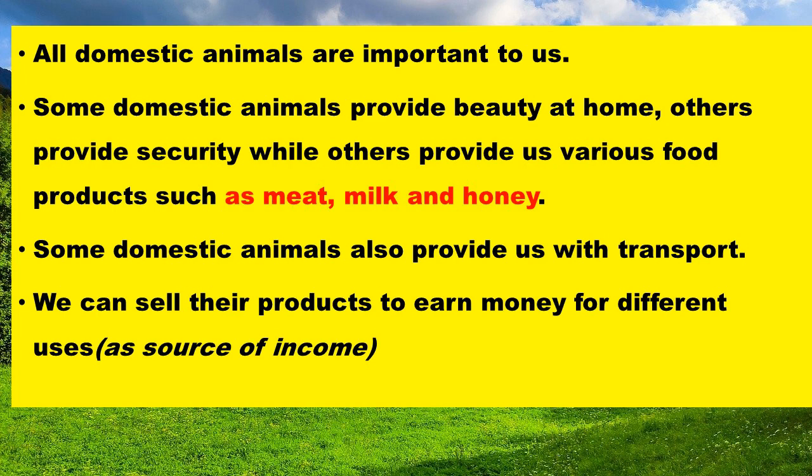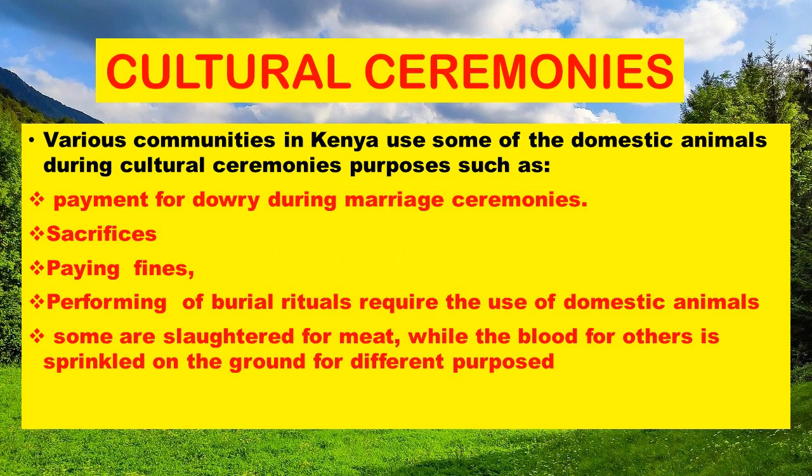We can sell their products to earn money for different uses, making them a source of income. During our old ages, our people also used domestic animals during cultural ceremonies or festivals. Various communities in Kenya and around the world use domestic animals during cultural ceremonies, such as paying dowry during marriage, paying fines, and performing burial rituals. Some are slaughtered for meat, while the blood of others is sprinkled on the ground for different purposes.